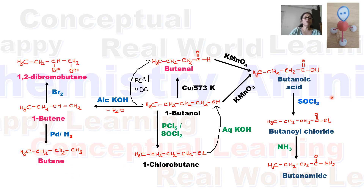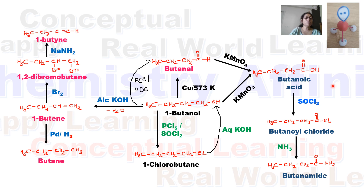When 1-butene is treated with bromine, we get a vicinal dihalide — here, 1,2-dibromobutane. 1,2-dibromobutane can then convert back to 1-butyne, a terminal alkyne, when treated with a strong base like sodamide.